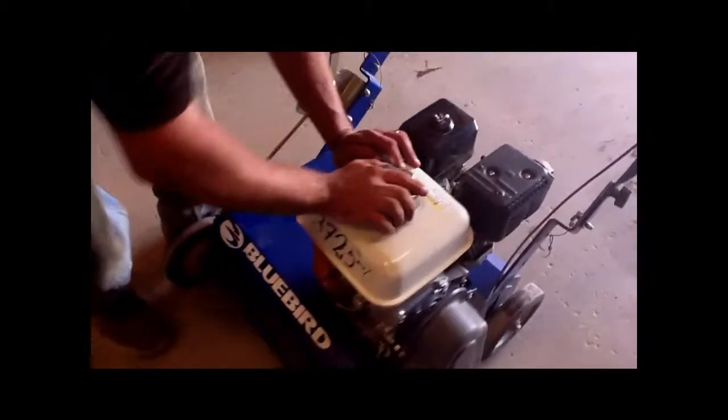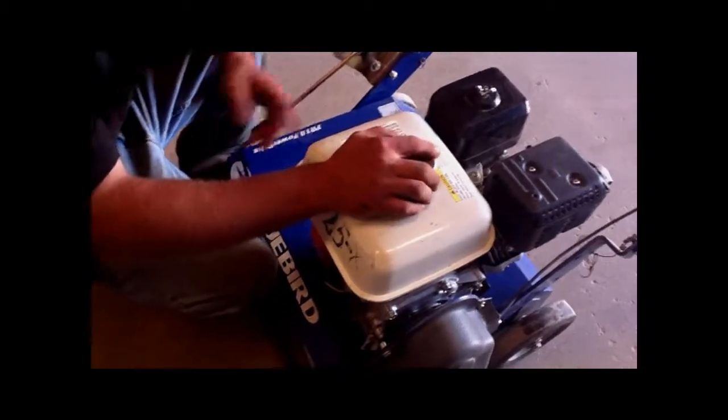Alright, this is the dethatcher. What we're going to start out doing is checking your fuel level. It needs to be at least three quarters in the tank. That's what we fill them to.